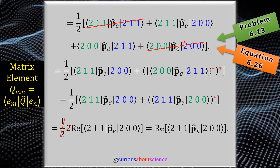After eliminating those two terms by Laporte's rule, we simplify down to just two remaining matrix elements — much better than four. Each of those four would have had three components from Pe, meaning 12 sets of integrals. Using the conjugate method, we write this as a real part; the one-half and two cancel, leaving just the real part of the expectation value. Keep a mental note that keeping the Re does have an effect later in this problem.